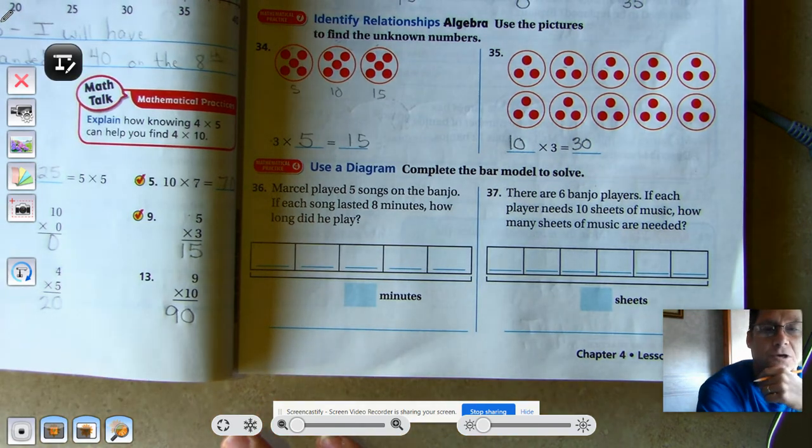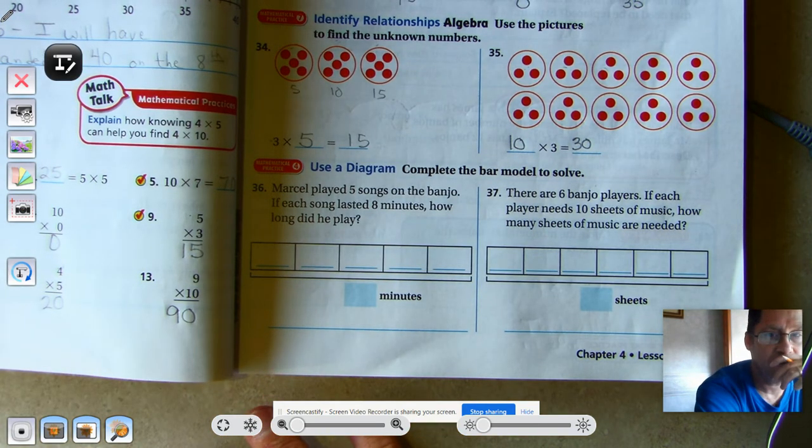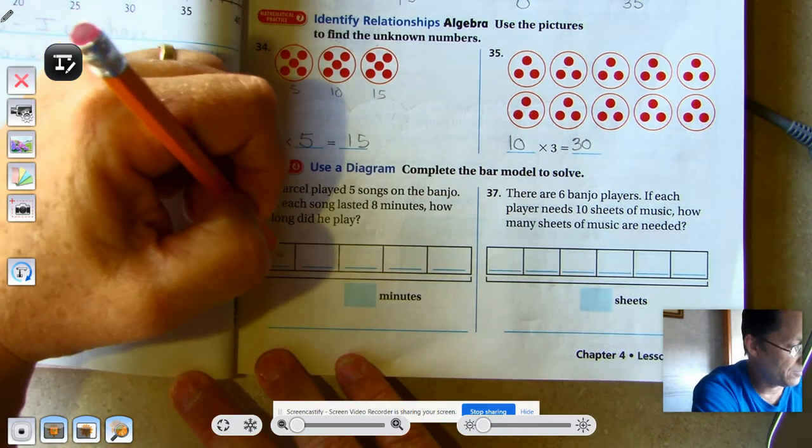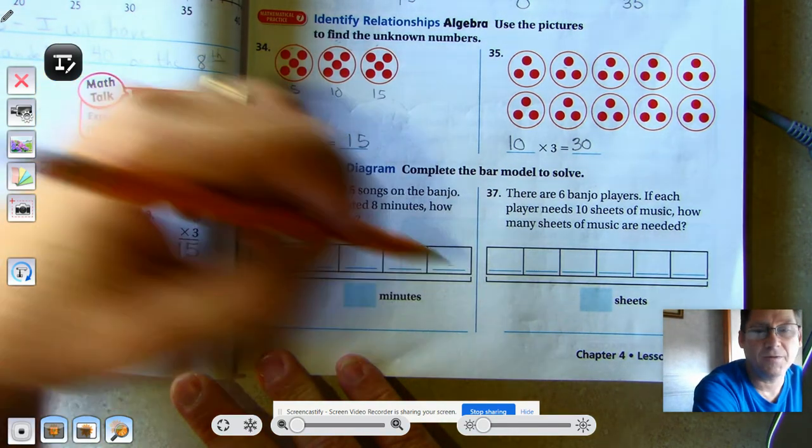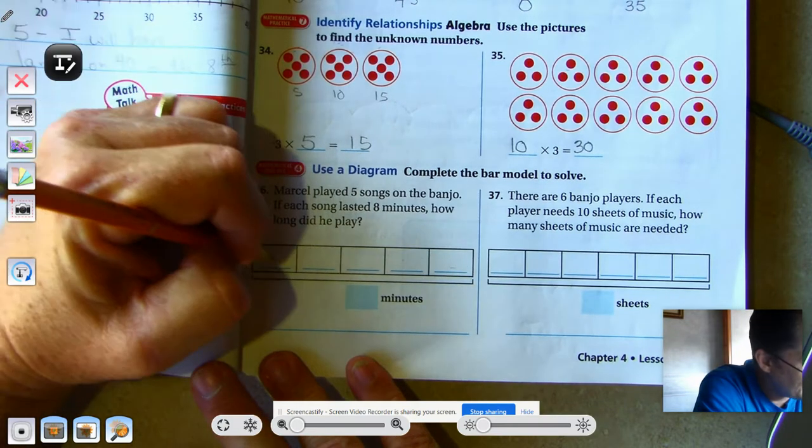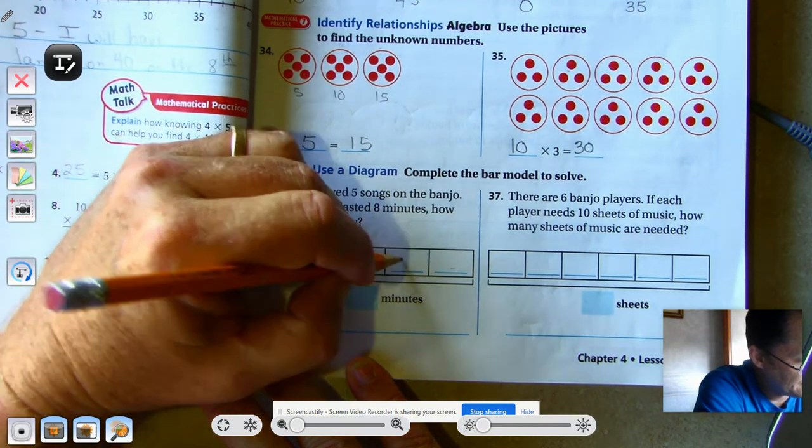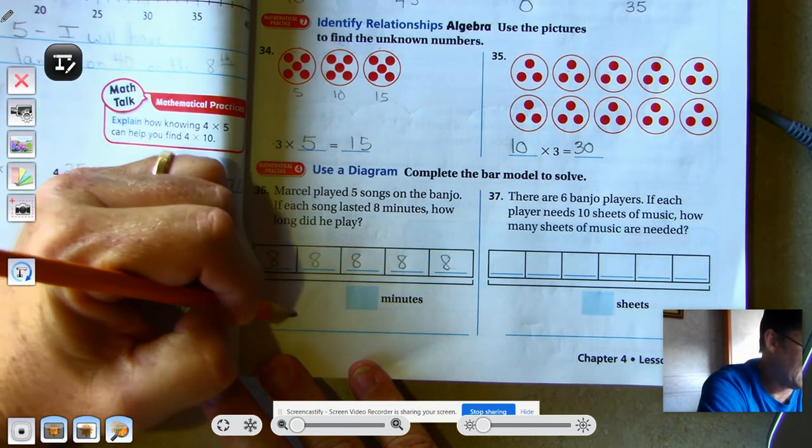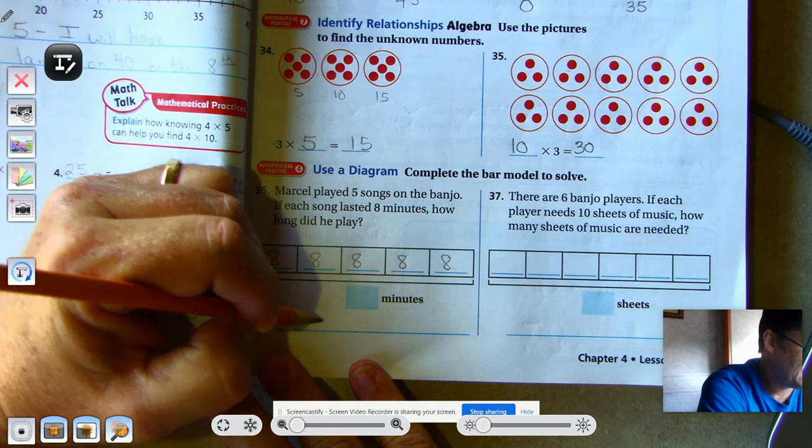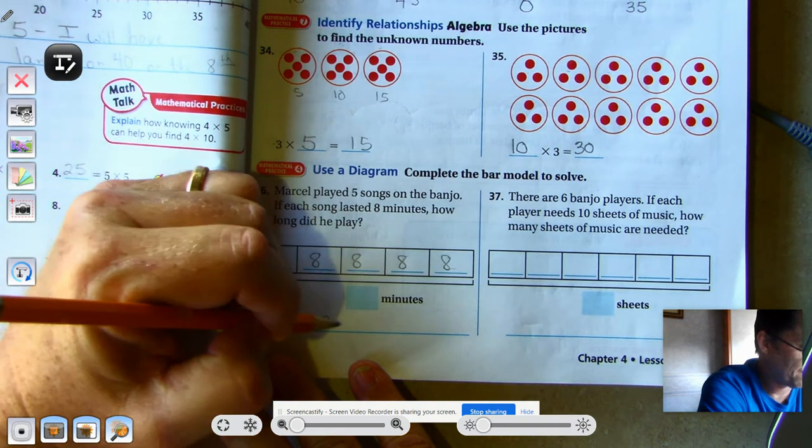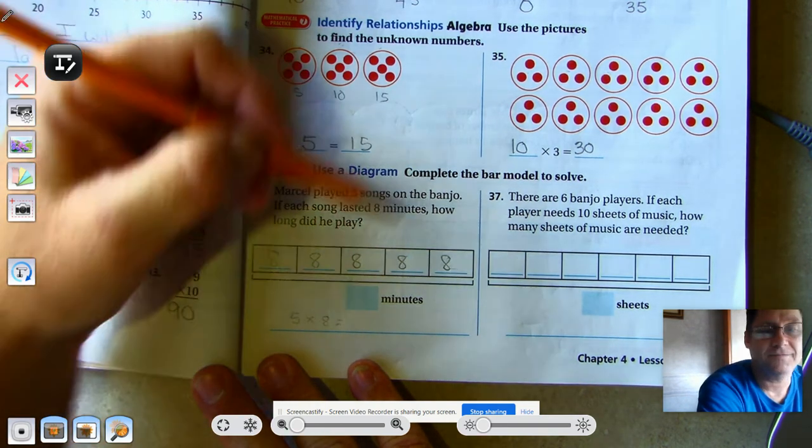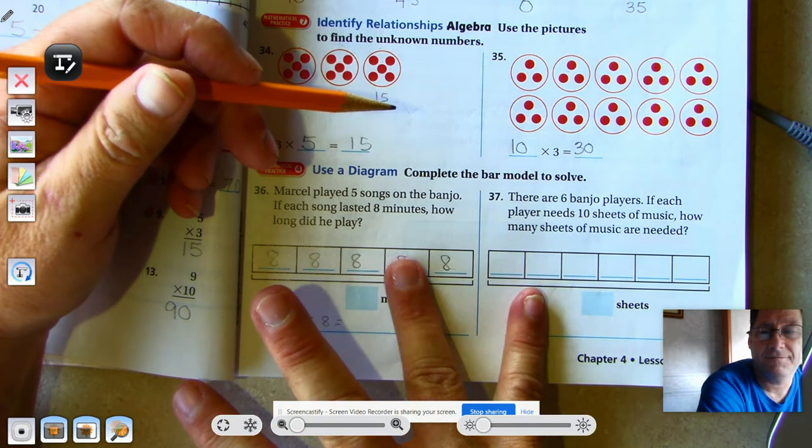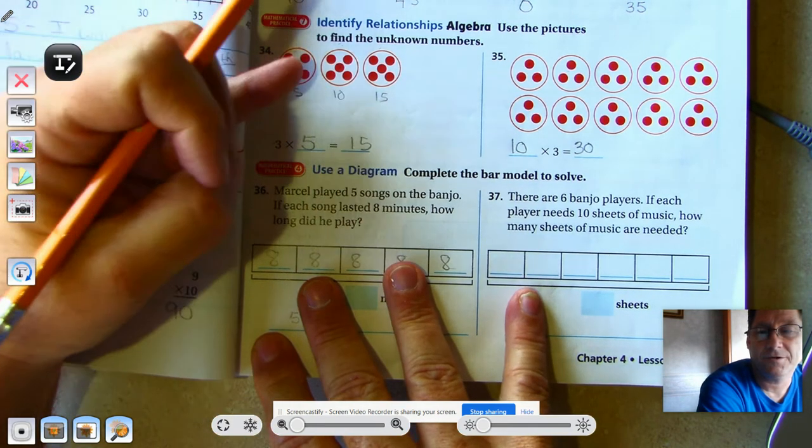You complete the bar model to solve. Marcel played 5 songs on the banjo. Each song lasted 8 minutes. So we see in the bar model 1, 2, 3, 4, 5 boxes. And we're going to put 8 in each box. So he has 5 times 8. So 8 times 5, five 8s would be 5, 10, 15, 20, 25, 30, 35, 40.